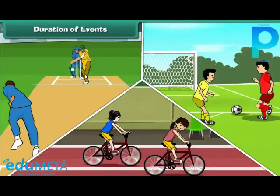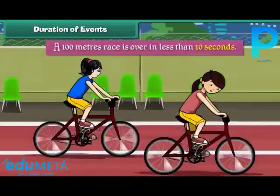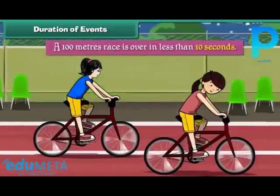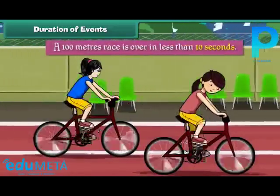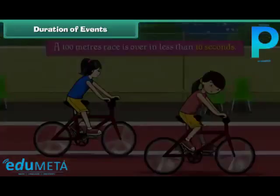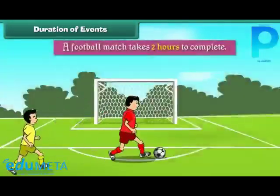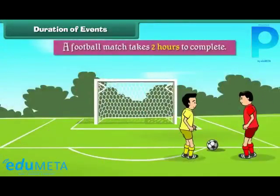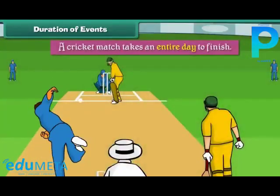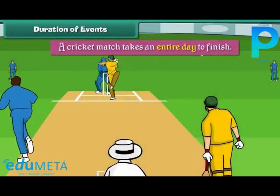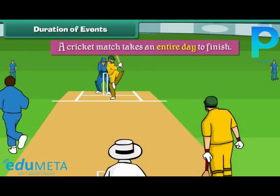Duration of events. Different events take different times for completion. A hundred meters race is over in less than 10 seconds. A football match takes 2 hours to complete. A cricket match takes an entire day to finish.